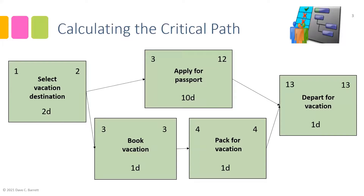We have now completed the forward pass. The earliest this project may finish given the planning assumptions is 13 days. Now we're going to do the backward pass — similar calculations but moving from right to left through the network diagram to calculate the Late Finish and Late Start for each activity.